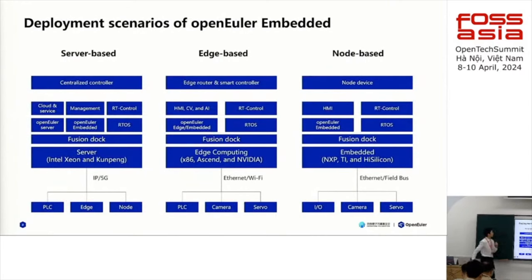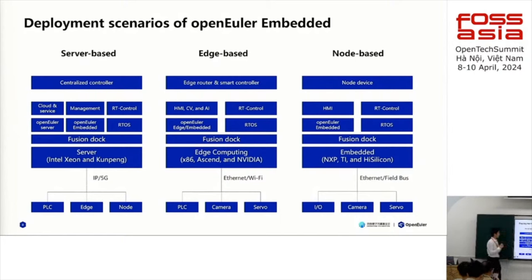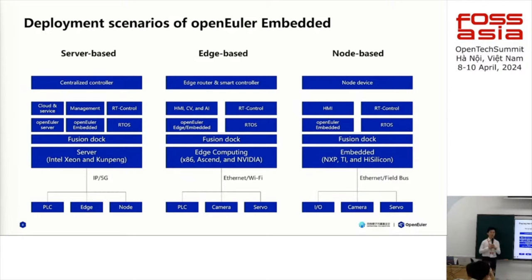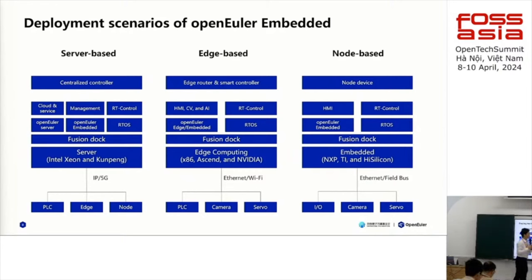We can deploy our operating system in three different kinds of systems. First, we can deploy it as a server so that it can control different kinds of node devices through the internet. We can also deploy it as an edge-based system for edge computing. And we can deploy it as originally designed — for the embedded system — where it can control different kinds of peripherals.